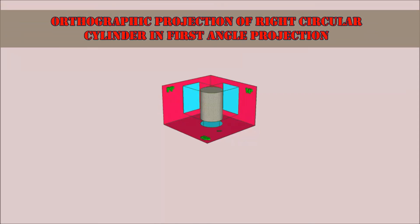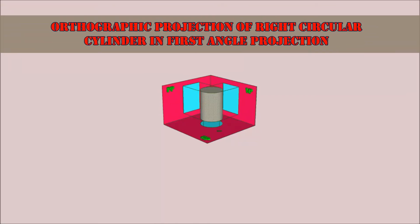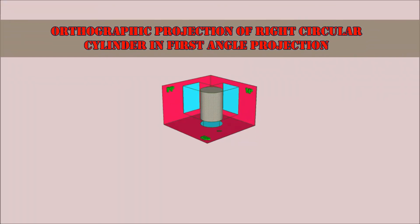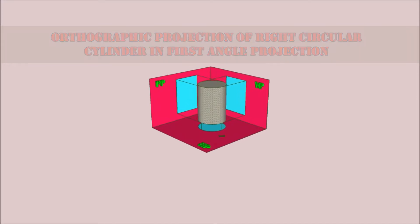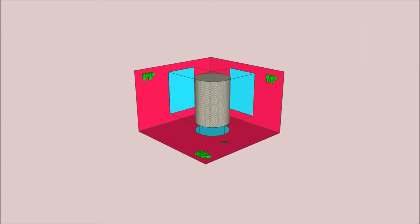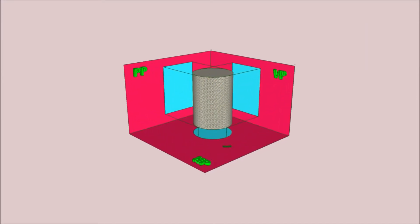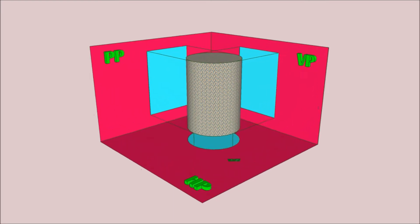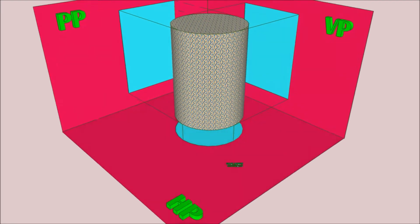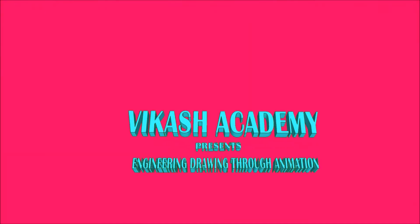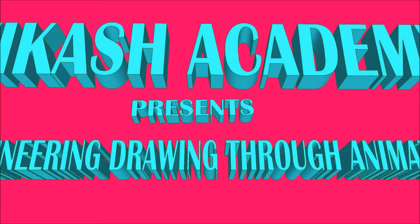Hey guys, this is Vikas once again back with another tutorial in the series of orthographic projection through animation. In this particular animation we are going to see the orthographic projection of a right circular cylinder on different planes: vertical plane, horizontal plane, as well as profile plane. This is a problem regarding first angle projection.